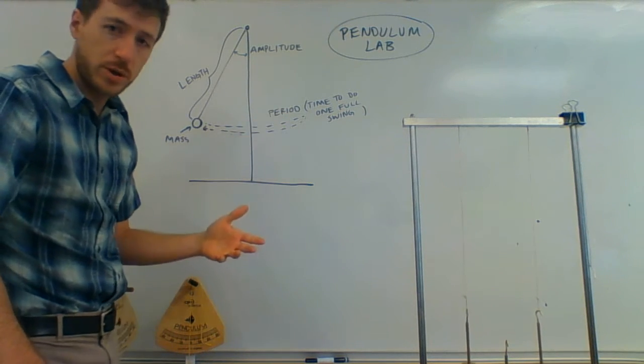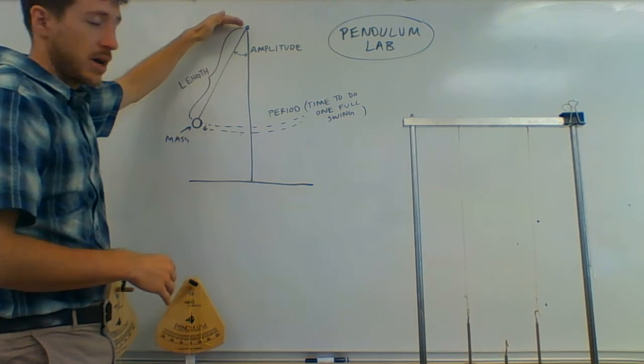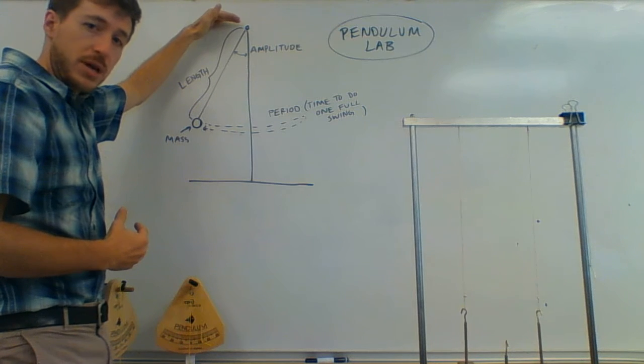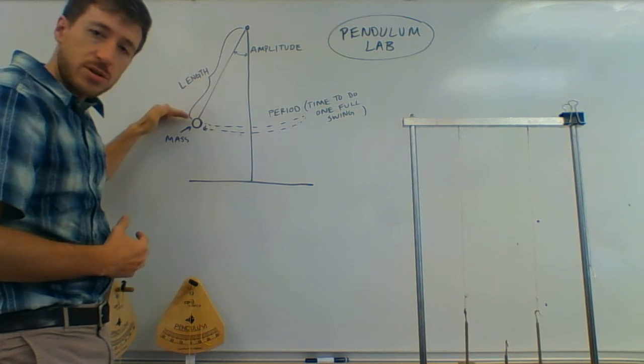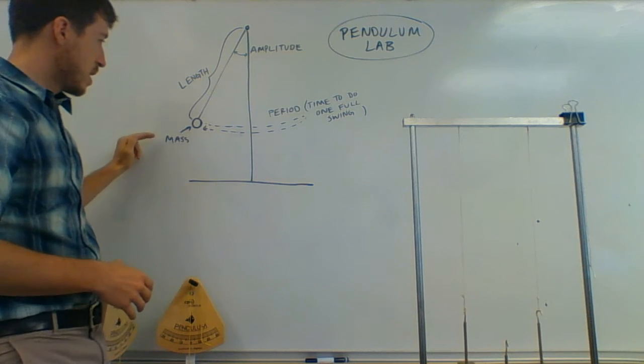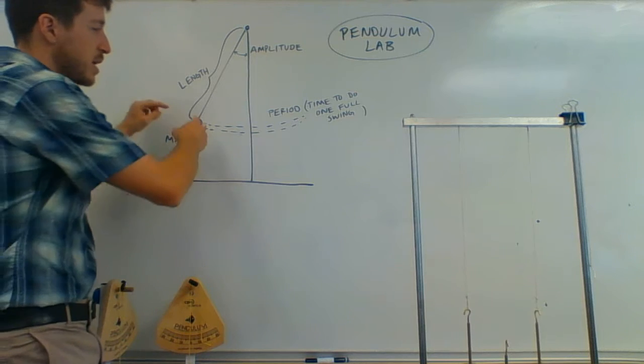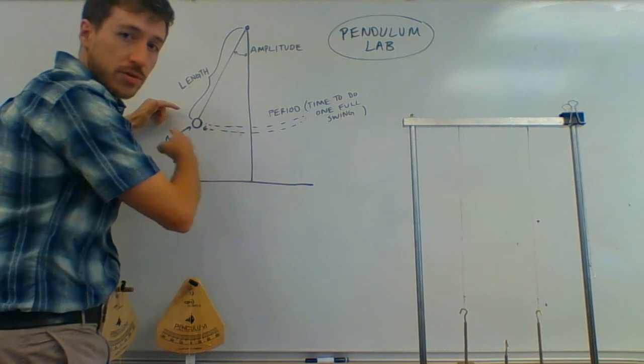Now I've talked a little bit about what those things are. The amplitude is how far you pull it back. The length is how long the pendulum is from the pivot point to the center of mass of your mass. The mass is the actual amount of matter in your pendulum. And then the period is how long it takes to do one full swing.